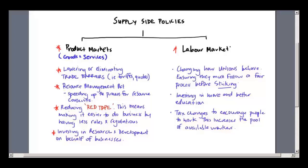What about the labour market? The government is changing how unions can behave. Unions are organisations or groups that represent the rights of employees. Often in the past unions have had a lot of power, meaning they can go on strike if they're unhappy with what their employers are doing. The government's position is that while they have that right, it's got to be used responsibly. So the government has changed the rules around unions to ensure they have to go through a certain process before they're allowed to strike.